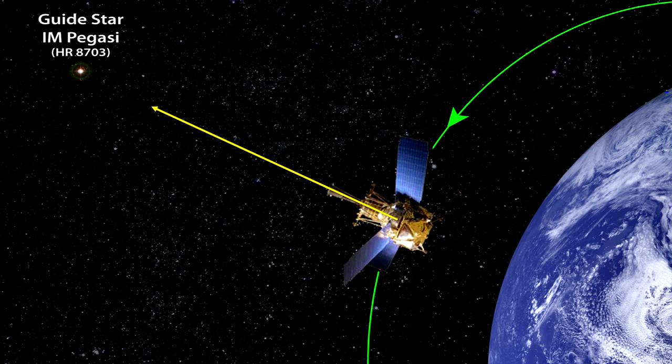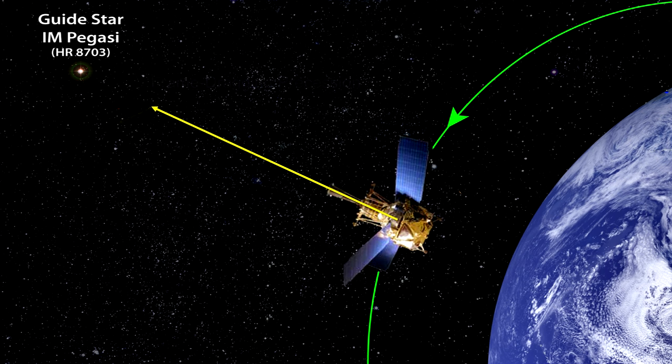By 2011, data analysis had confirmed that frame dragging did occur and measured it to within 15 percent of the amount predicted by the Kerr metric for Einstein's field equations.